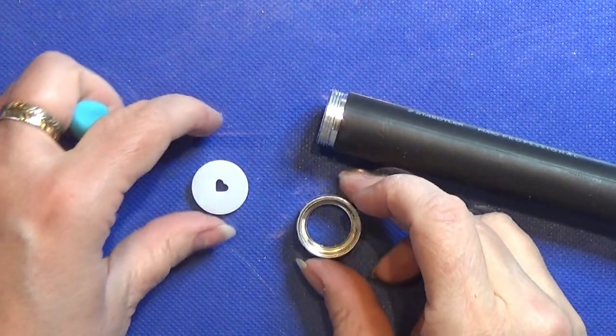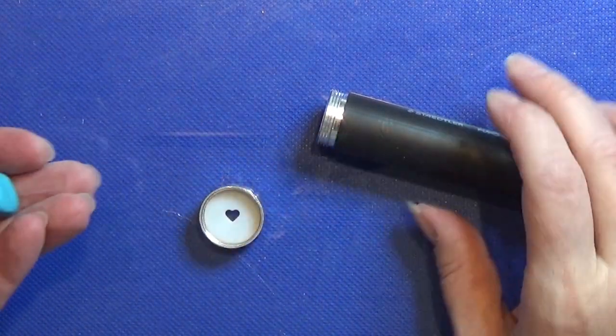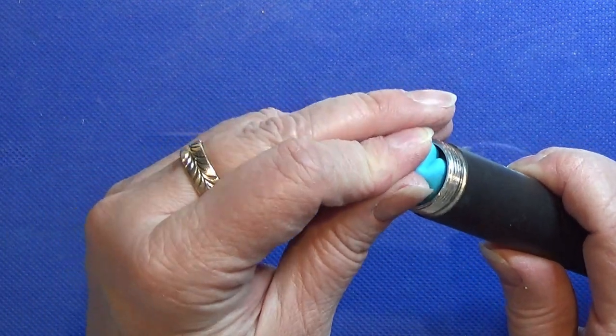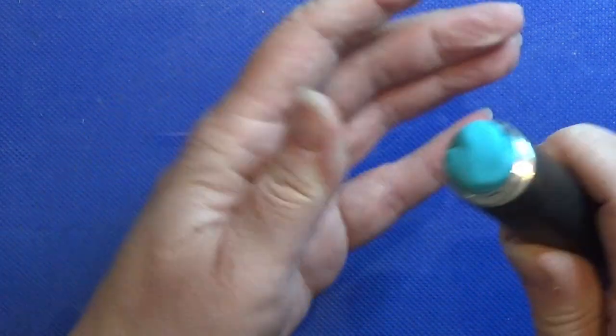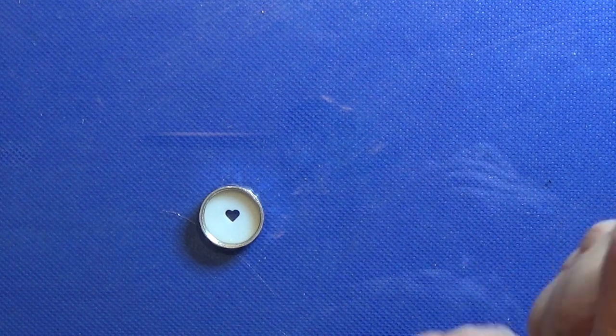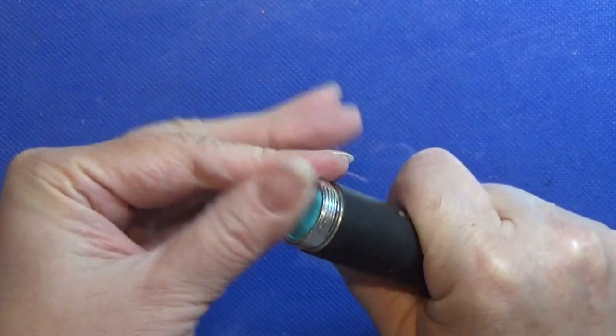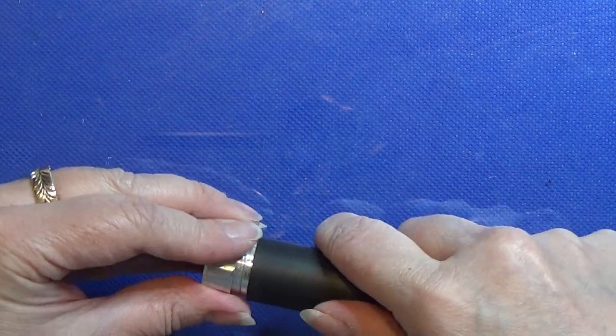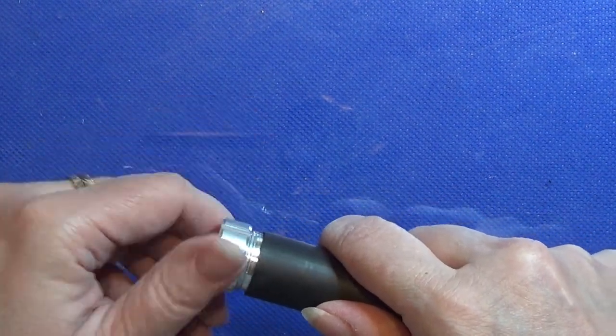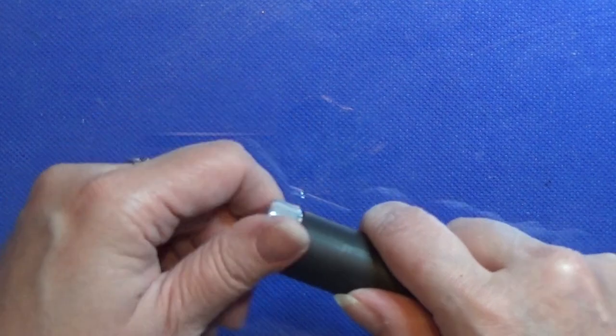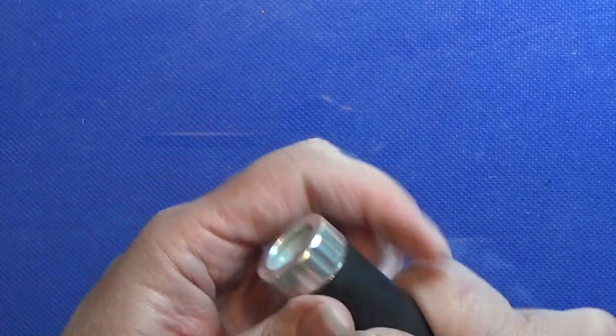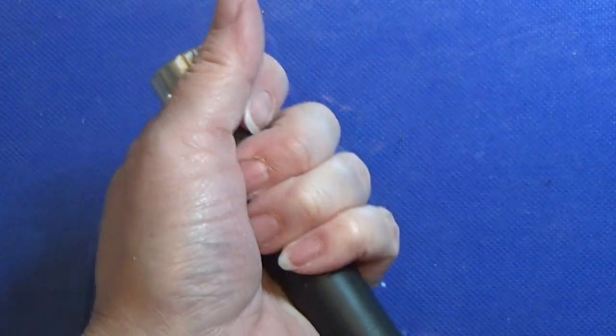I designed this heart thing for my clay extruder in Fusion 360 and I printed it on my resin printer. I'm going to use that for making a heart-shaped cane from the clay extruder. If you want the print file for this one, I'm going to leave it in the info box below.